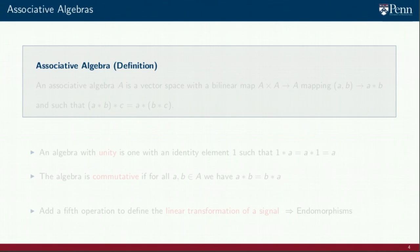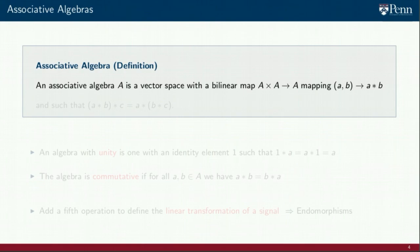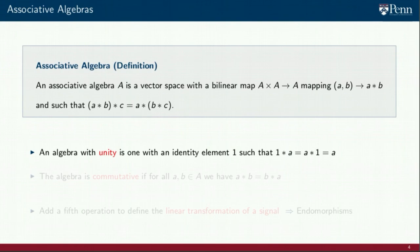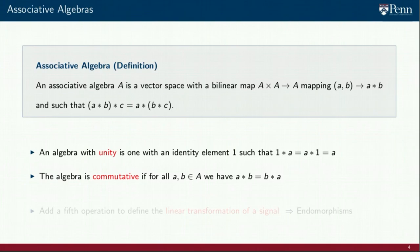The final definition we introduce is the notion of an associative algebra. An associative algebra is a vector space in which we also define a bilinear map denoted as a product with an asterisk. The only condition we impose on this product is that it be associative. If the algebra also has an identity element, we say it is an algebra with unity. If the order of the products is not important, we say the algebra is commutative. We will work with associative algebras with unity, and for the most part with commutative algebras.